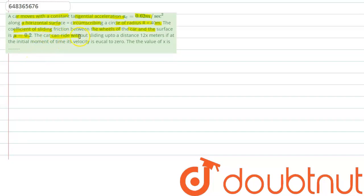The car can ride without sliding up to distance 12x meters if the initial moment of time its velocity is equal to 0. The value of x is how much?